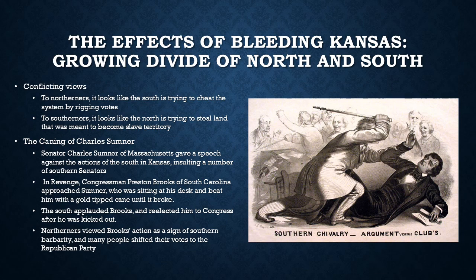This divide turned into violence even in the Capitol building when Senator Charles Sumner was beaten by a Southern congressman. Sumner had been giving a speech against what was happening in Kansas, insulting several Southern senators. In revenge, Preston Brooks from South Carolina approached Sumner at his desk and beat him on the head repeatedly with a gold-tipped cane until it broke. The South applauded Brooks and even re-elected him to Congress after he was initially removed. But Northerners viewed Brooks' action as a sign of Southern barbarism, and many people shifted their votes to the Republican Party.